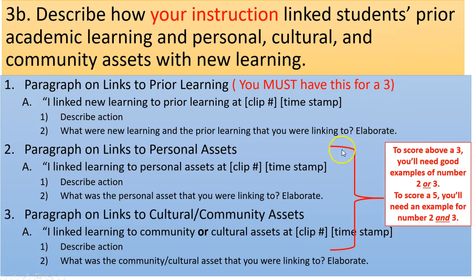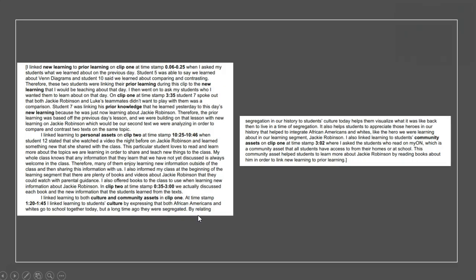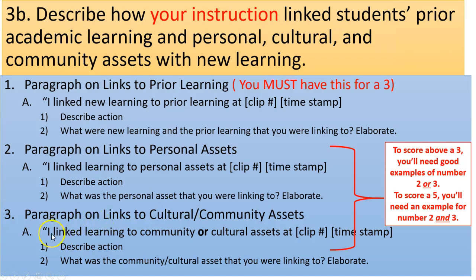To score above a three, you're going to have to go further. You need a paragraph that links personal assets and a paragraph that links cultural or community assets. For personal assets: 'I linked learning to personal assets at clip number [X] at timestamp [Y],' describe your action, explain what the personal asset was, and elaborate. You get to choose personal assets or cultural/community assets — you don't need to do both to score a five.